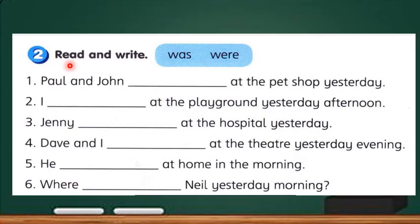Let's try the exercise in activity two. Read and write and then fill in the blanks with was or were. Number one, Paul and John at the pet shop yesterday. Let's look at here, Paul and John. There are two persons here. So, you should use were, correct. Number two, I at the playground yesterday afternoon. The answer is was because I is a singular noun.